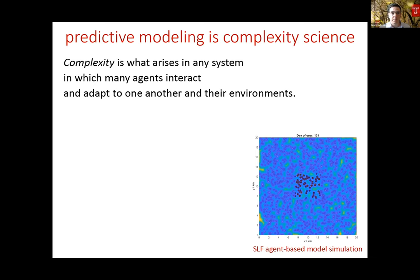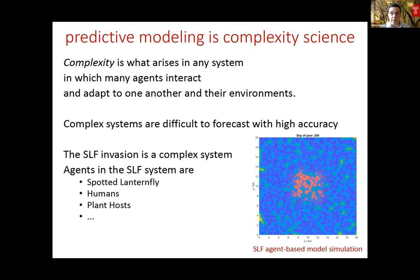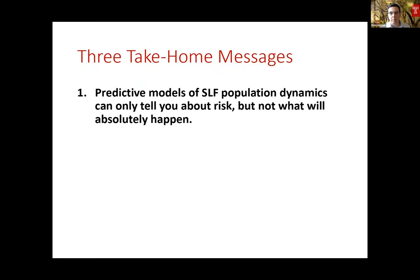Complexity arises in any system in which many different agents interact and adapt to each other and their environments. These types of complex systems are very difficult to forecast with high accuracy. The models you're going to see — we are all doing our best to forecast things, but you really can't take them as the truth of what's going to happen in the future. You can only take them as risk. This invasion is a really complex system with lots of different agents: spotted lanternfly, humans, plant hosts, all interacting in very complex ways. The first take-home message: predictive models of spotted lanternfly population dynamics can only tell you about risk.